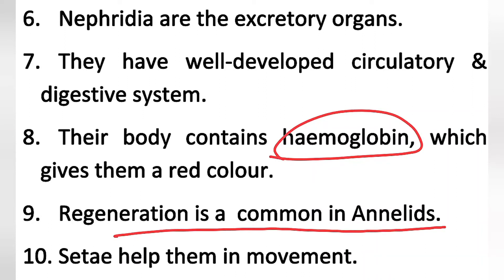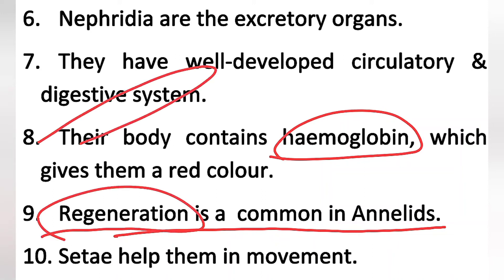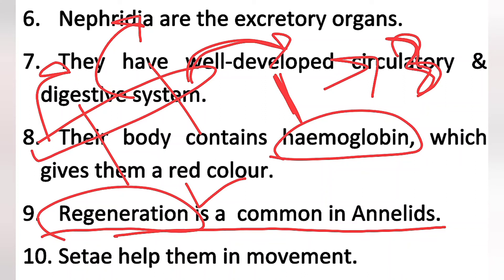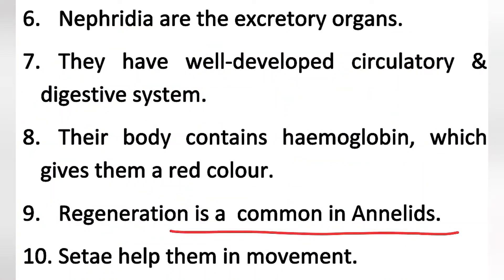Regeneration is common in annelids and is very important. If an earthworm is accidentally cut into three parts, each part can regenerate into a new earthworm, giving you three new earthworms. This process is called fragmentation. Since there is no formation of gametes, no fertilization, and no zygote formation, this is a type of asexual reproduction. Regeneration is a type of asexual reproduction.